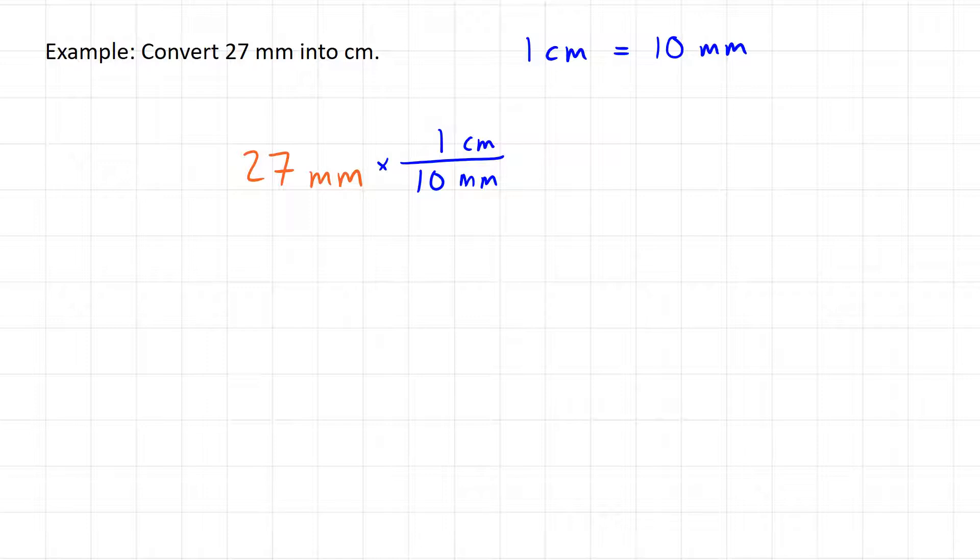Again, what this does is get rid of those millimeter units and leave us with centimeters. But what we see this time is that we have a 10 on the bottom of the fraction. So the calculation looks like 27 divided by 10 centimeters. In your calculator, you'd write 27 divided by 10, and this gives us our measurement in centimeters: 2.7 centimeters.